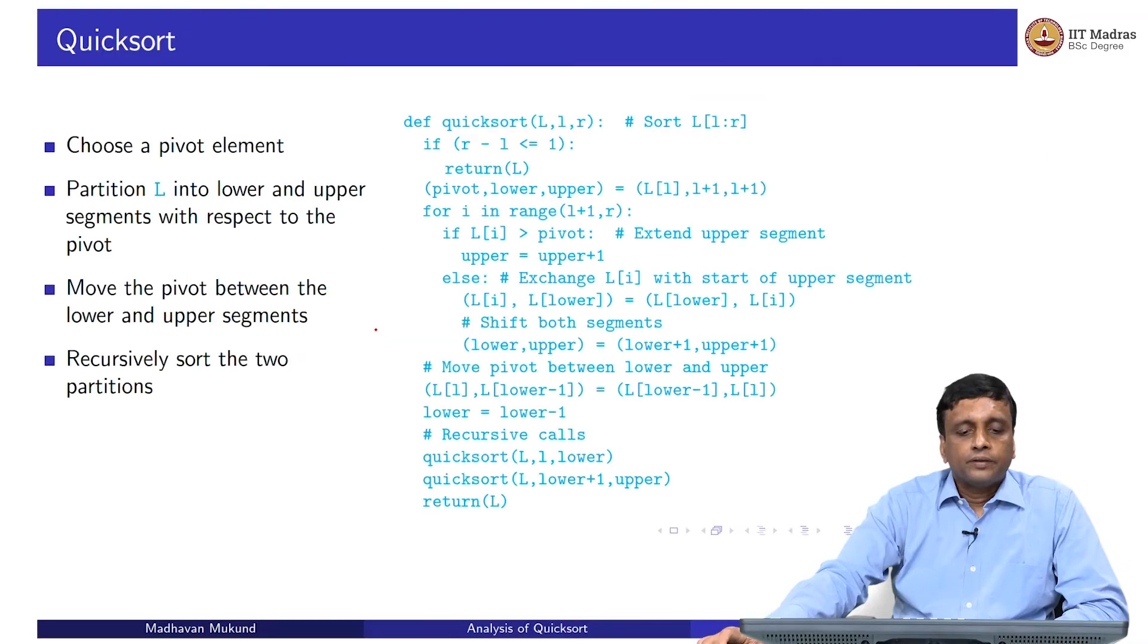Let us analyze quicksort. Remember, this is how quicksort works: it chooses a pivot, partitions it, moves the pivot between the lower and upper segments, and then recursively sorts the two partitions.